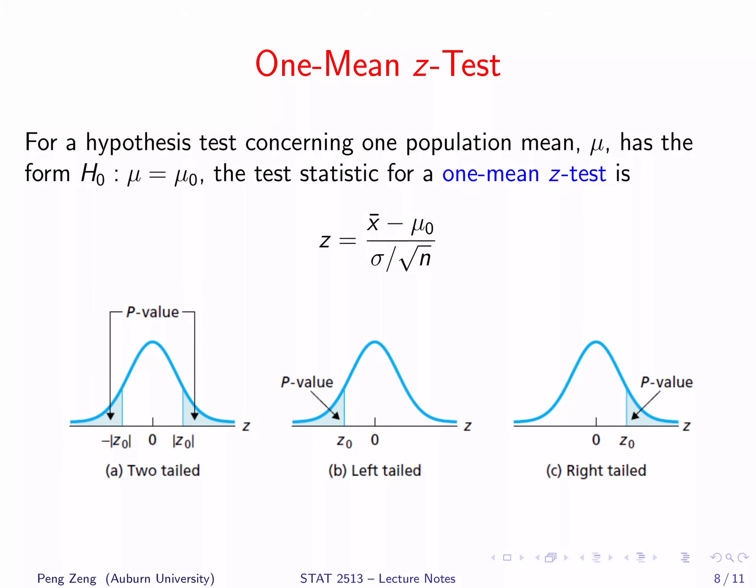Let's check the one-mean z-test. For this test, we want to compare the population mean mu with a given constant. The test statistic is the z-score: x-bar minus mu-zero divided by sigma over square root n. The test statistic remains the same regardless of the alternative hypothesis. When the alternative hypothesis is left-tailed, the p-value is the probability less than the test statistic. When it is right-tailed, the p-value is the probability greater than the test statistic. When it is two-tailed, the p-value is the probability on both tails — the p-value of a two-tailed test is double that of a one-tailed test.